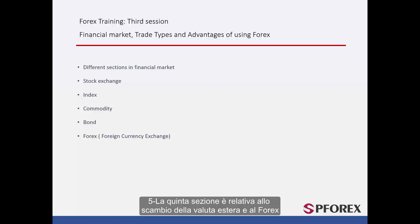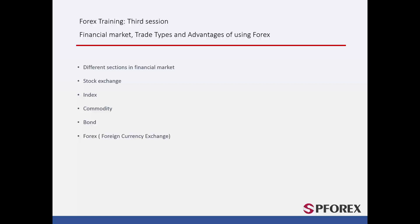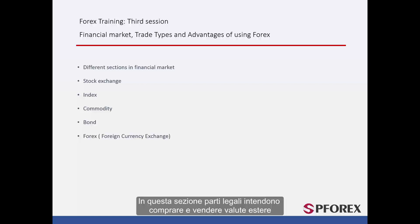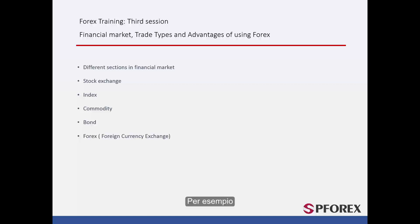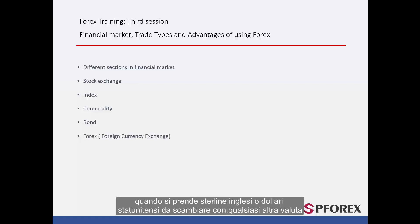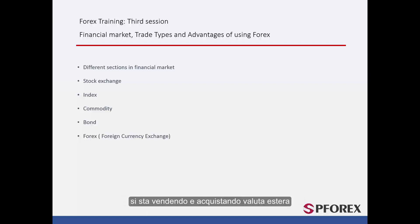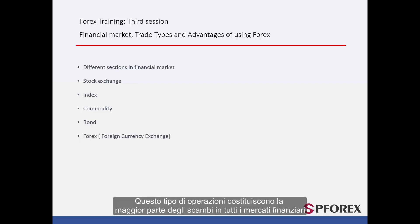The fifth section is related to the Foreign Currency Exchange and Forex. This is the largest part of the market. In this section, legal parties intend to buy and sell foreign currencies. For instance, when you take British Pounds or US Dollars to exchange for any other currency, you are selling and buying foreign currency. These kinds of transactions make up the majority of trades on all financial markets.